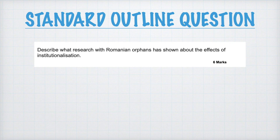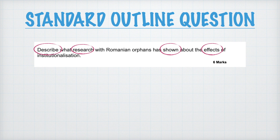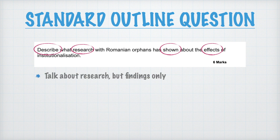The first question is a standard outline for six marks. The key here is we have a describe question — an outline. We have to talk about what research has shown. We don't necessarily have to talk about how the research was done; we are talking about the effects of institutionalization, specifically Romanian orphans. We're talking about findings only. Rutter's English Romanian adoptee study is a nice place to start because it looks at both intellectual impacts and the attachment side of things.